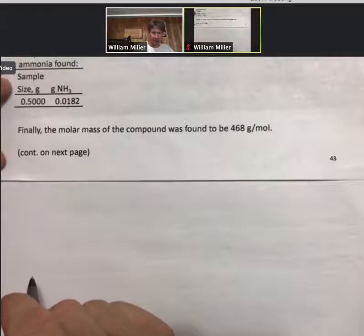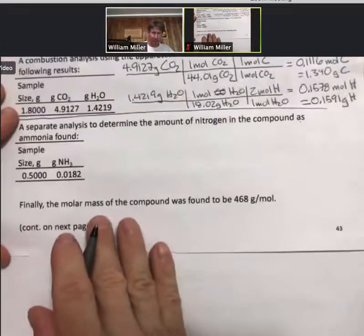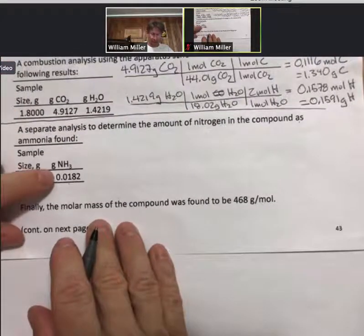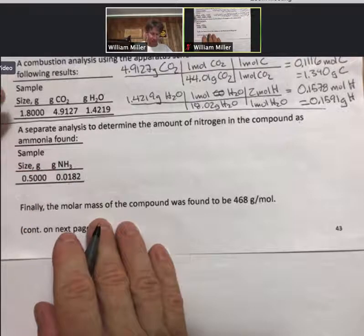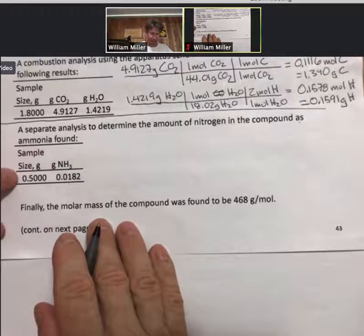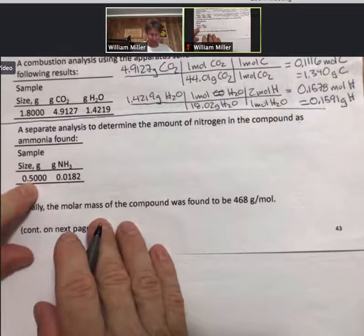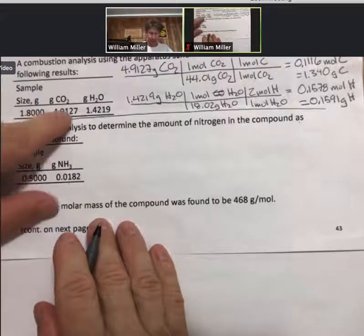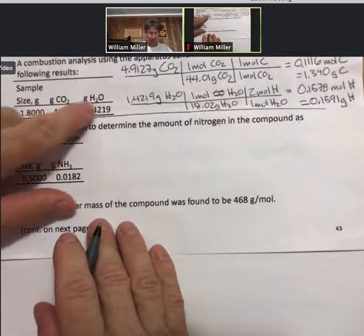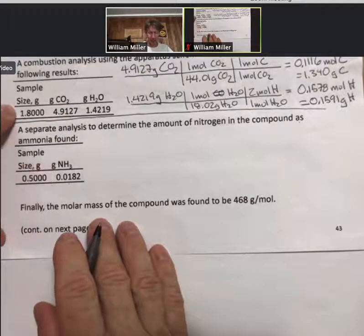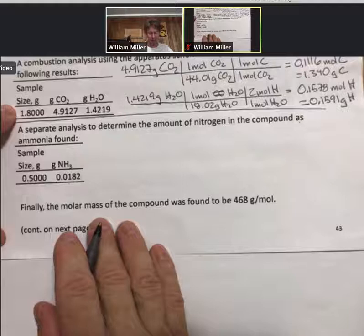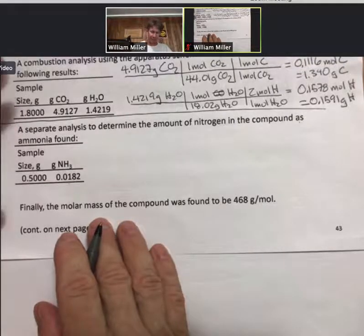See how there's a different sample size for the nitrogen? The first thing we want to do is we want to get the grams of ammonia on the same sample size as the 1.8 grams. So like this ammonia is in 0.5 grams. To compare it to the carbon dioxide and the H₂O, we need to get the amount of ammonia in 1.8 gram size sample. To do that, we use what's called a scaling factor.